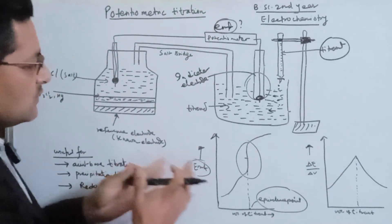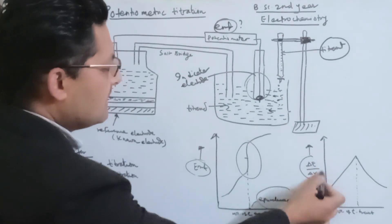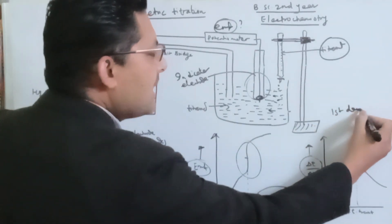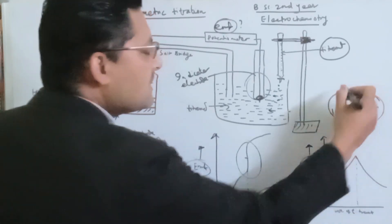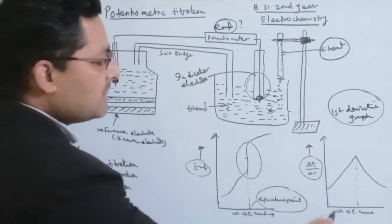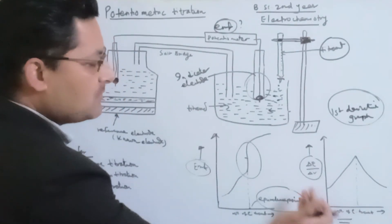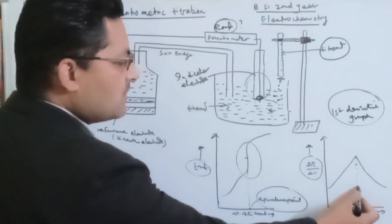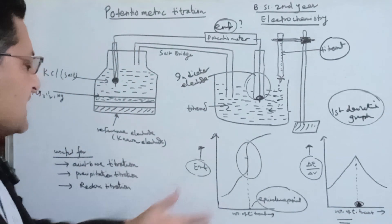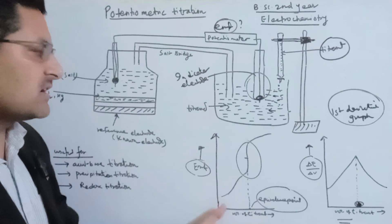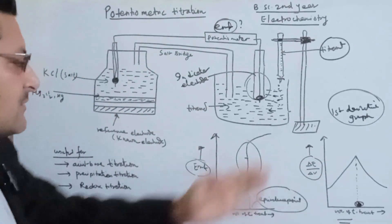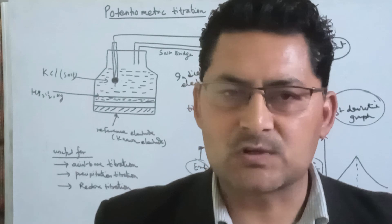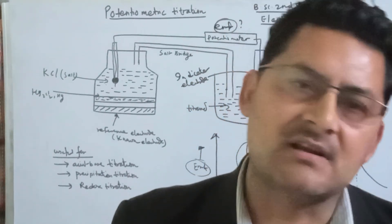If we change the graph, we can plot a first derivative graph where the number is divided to get the derivative. When the derivative ΔE/ΔV is plotted, we can change the x-axis. The peak of this derivative curve corresponds to the equivalence point. This EMF reading and derivative analysis helps determine the endpoint accurately.